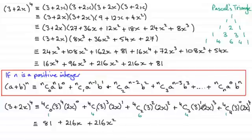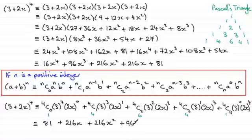For this term, 4C3 is 4, times 3, times 8x cubed — remember the 2 is cubed. So 4 times 3 times 8x cubed gives me 96x cubed. And the last term: 4C4 is 1, anything to the power 0 is 1, and so you've got (2x) to the power 4, which is 16x to the power 4.